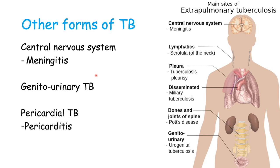Other forms of TB can affect the central nervous system, leading to meningitis, as well as the genitourinary system and the pericardium — the sac around the heart — leading to pericarditis. Here we have an image providing a summary of the most common areas affected by tuberculosis.